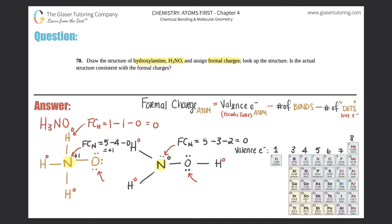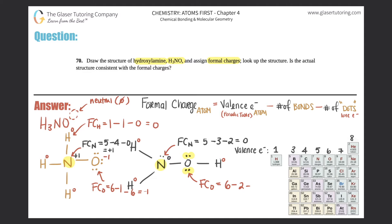Now we need to figure out the formal charges for the oxygens. Hydroxylamine has no overall charge, so the whole molecule must be neutral. If the left compound has a plus one nitrogen, the oxygen must be negative one to balance. Formal charge for the left oxygen: six valence electrons, minus one bond, minus six dots equals negative one. The right oxygen: six minus two bonds, minus four dots equals zero — neutral.